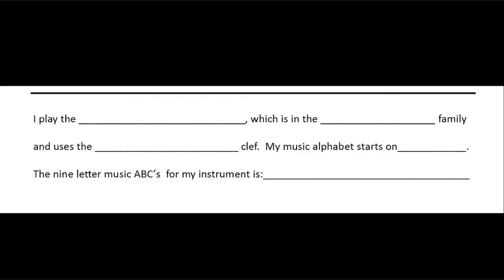This next section is all about your instrument. Write what you play and which family you're in. If you need to check the spelling, it's right above this box. Now you will write treble or bass — don't write them both. Notice that they are color-coded, just like the lines were in my presentation. Your musical alphabet, if you're treble clef, starts on E, and if you're bass clef, it starts on G. There are nine letters — not seven — because there are five lines and four spaces, adding up to nine.